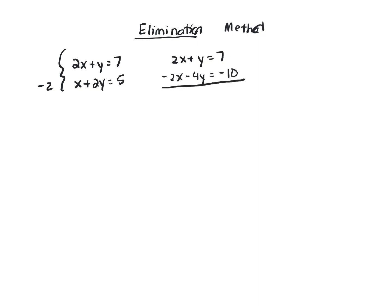If you look, when you add these two equations, 2x minus 2x is 0. You have eliminated your x's.